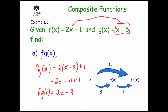Let's just check it works. Let's choose x equals 2. We apply g first: 2 minus 5 equals minus 3. Then we apply f: 2 times minus 3 is minus 6, plus 1 equals minus 5. Now if we put 2 straight into our answer, we get 2 times 2 which is 4, minus 9, which is also minus 5. So rather than applying g and then f, we can just apply 2x minus 9 and get the same result. So to find fg of x, take your g of x and put it into your f of x.